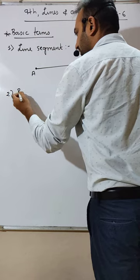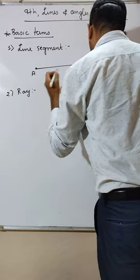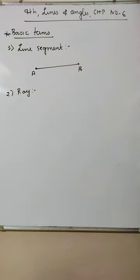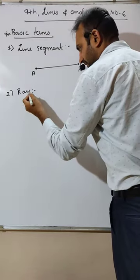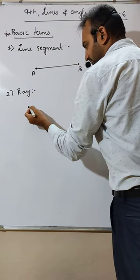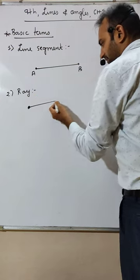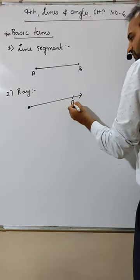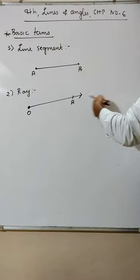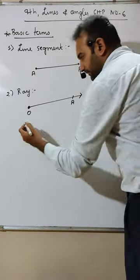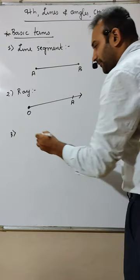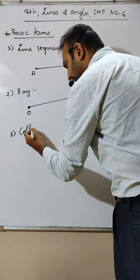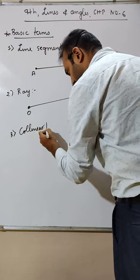Next: ray. What do you mean by ray? A ray is a part of a line which has one ending point, and the other end gives the direction in which the line is moving.